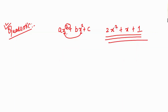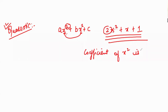Okay, next — what is the coefficient of x squared? Can you tell me? The x squared term has 2 in front of it, so the coefficient of x squared is 2. Now, can you tell me what is the coefficient of x? Here there is no written term in front of x, so we write 1.